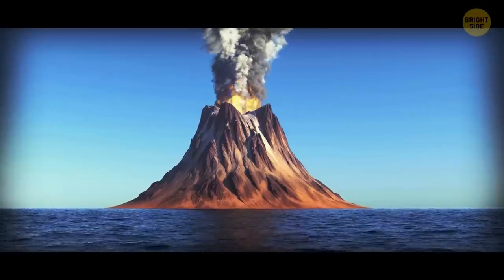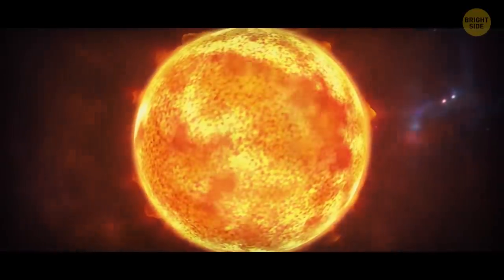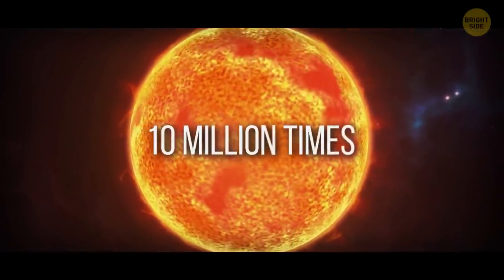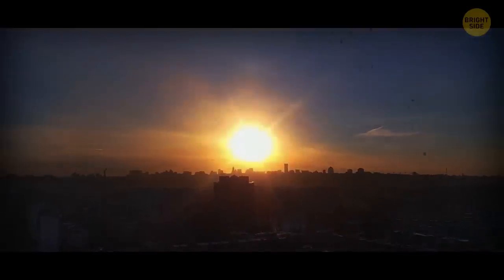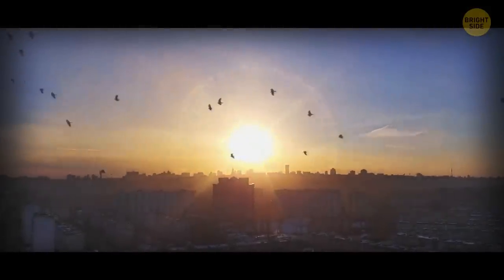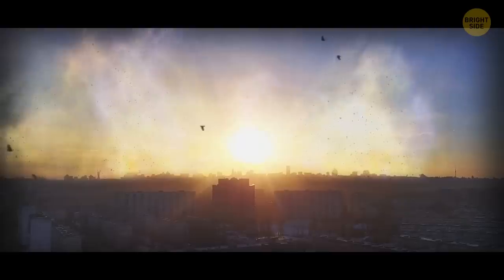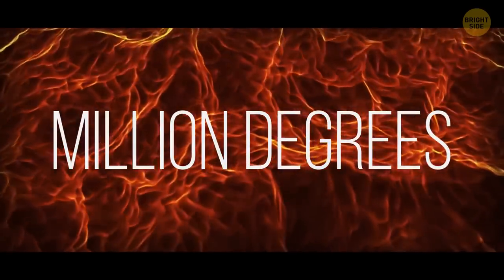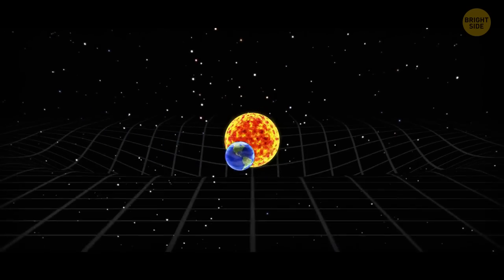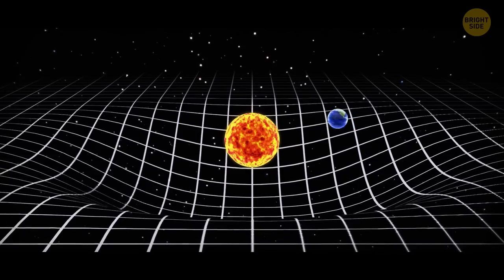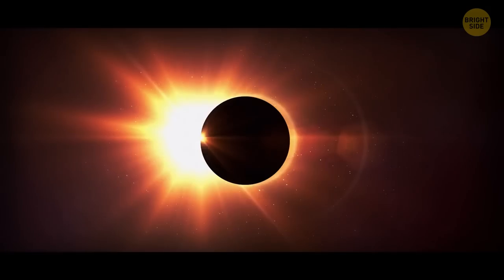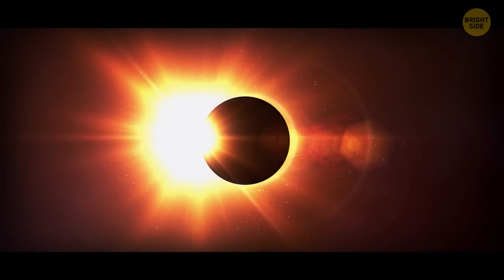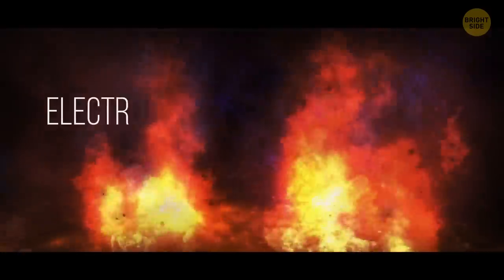The most powerful volcanic eruptions pale in comparison with solar flares that release 10 million times more energy. Within a few minutes, one solar flare can give out billions of tons of charged particles. Solar flares are also insanely hot, with temperatures reaching several million degrees Fahrenheit. Astronomers believe that such bursts of solar radiation happen when the sun's magnetic field gets twisted in some regions. At one moment, all the pent-up energy is released. The star sends out light and particles, mostly electrons and protons.